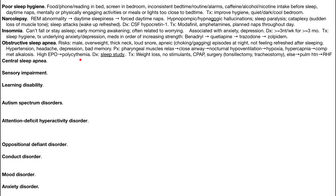The diagnosis for obstructive sleep apnea is a sleep study. Treatment addresses risk factors: lose weight, avoid stimulants. A CPAP or BiPAP machine can work, and the last resort is surgery — tonsillectomy or tracheostomy to open up the airways. If obstructive sleep apnea is not fixed, patients can develop pulmonary hypertension, which can lead to right heart failure.